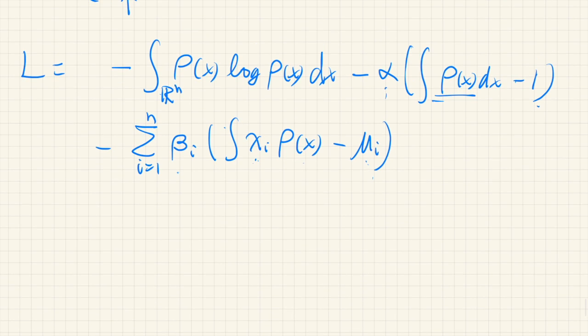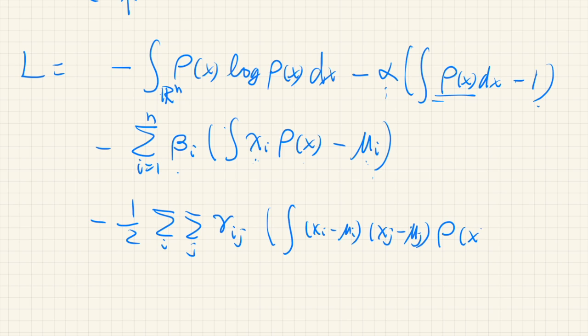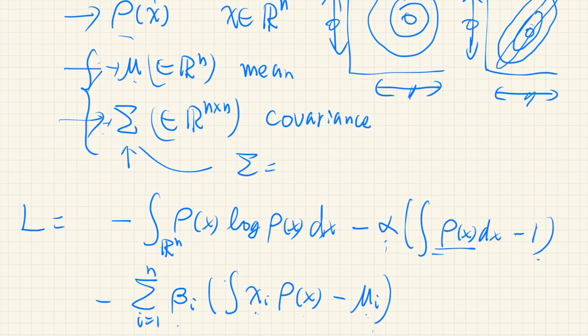And similarly, for the covariance, we have double sum i, j and let's say γ_ij. And for the covariance, we have (x_i - μ_i) times (x_j - μ_j) and ρ(x) dx, and this should be equal to the i-j element of the covariance matrix.